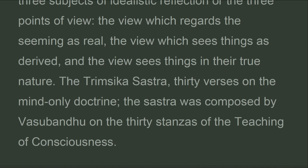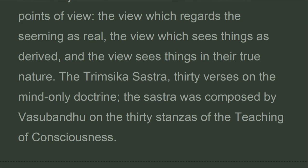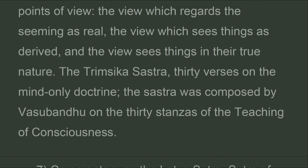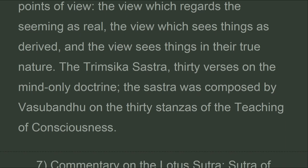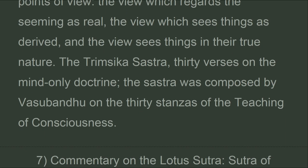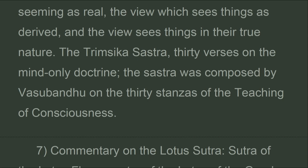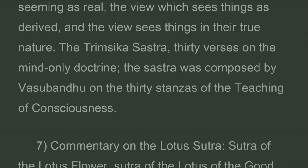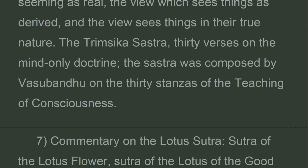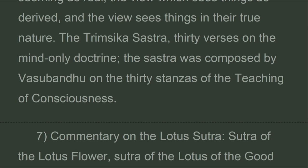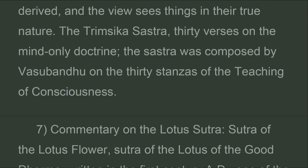According to this sastra, nothing but the transformation of consciousness exists. In the Vijnana-vada school, there are three subjects of idealistic reflection: the view which regards the seeming as real, the view which sees things as derived, and the view which sees things in their true nature. The Trimsika Sastra — 30 verses on the mind-only doctrine — was composed by Vasubandhu on the 30 stanzas of the teaching of consciousness.